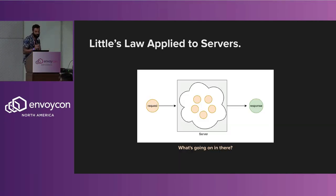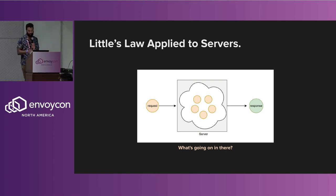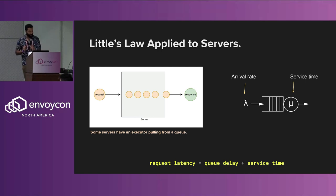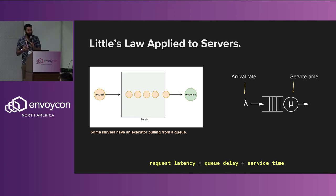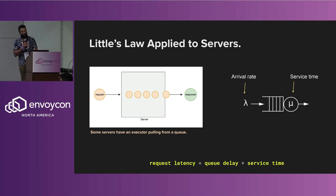If we apply this to a server: request comes in, response comes out. Some servers have an executor pulling from a work queue — worker threads pull from a queue and go through a channel or something — and there's a fixed service time. I process a request, it takes me some unit of time, and it always does that. The latency observed from a client is going to be the amount of time it spent in the queue — the queue delay plus the actual service time — which doesn't change depending on the size of that queue.